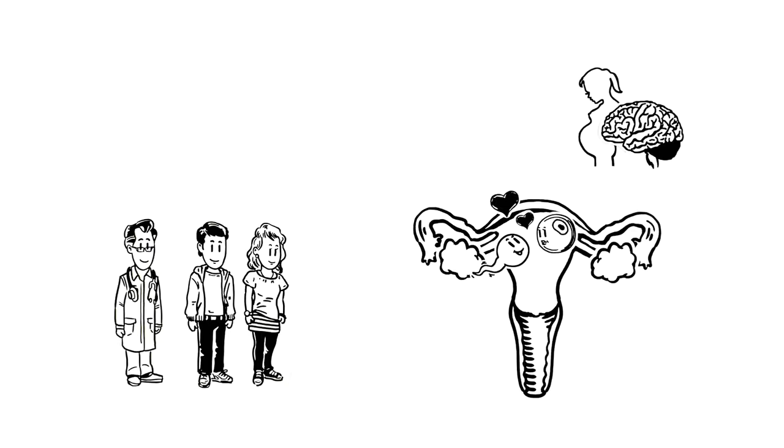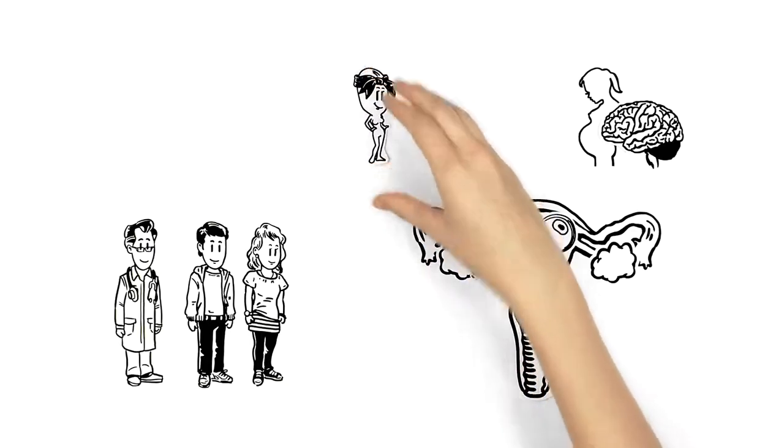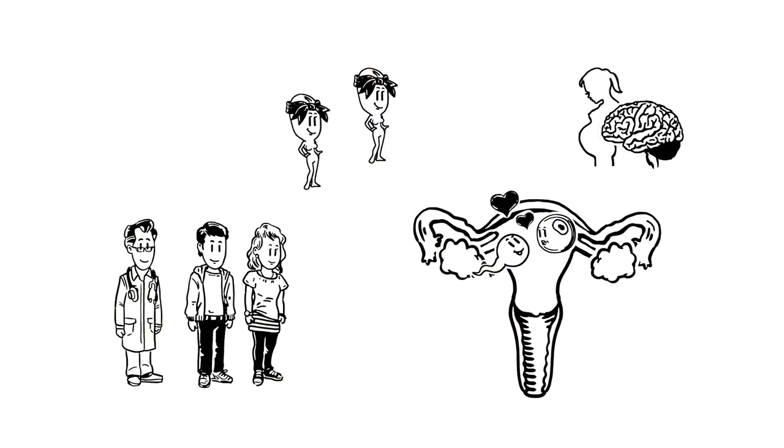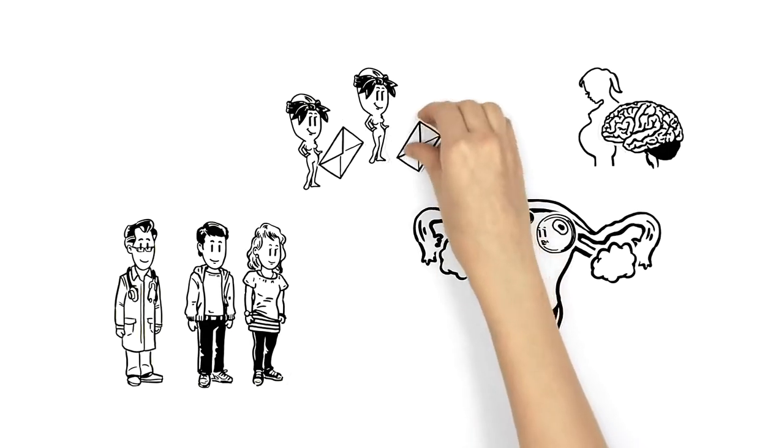...the concentration of the feminine sex hormone estrogen increases in the blood. Among other things, this messenger has the task of informing the body of the pregnancy.